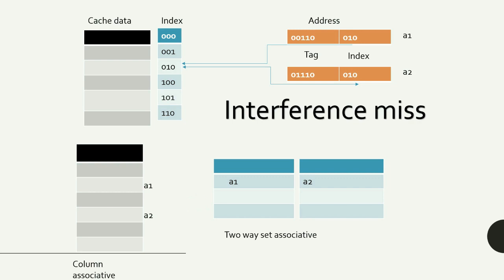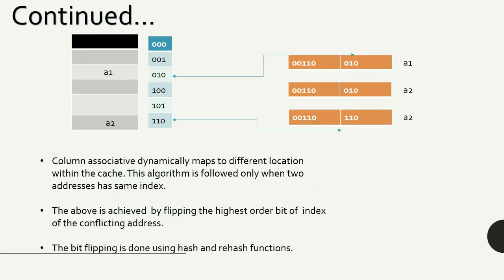Let's see how a column associative cache resolves this interference. Column associative caching dynamically maps a conflicting address to a different location within the cache. This algorithm is applied when two addresses have the same index. Address A maps to a particular cache block. Then the higher-order bit of the index in the address is flipped — inverted — so that, for example, 010 becomes 110, mapping it to a different cache block. This bit flipping is done using a hash or rehash function.